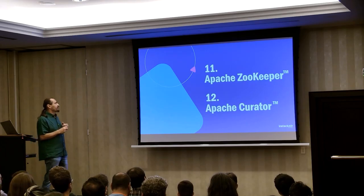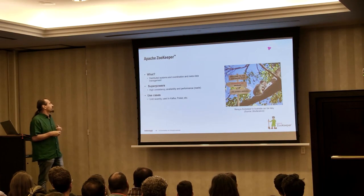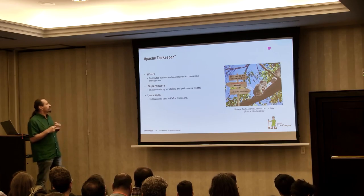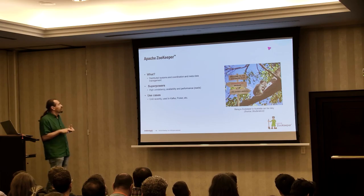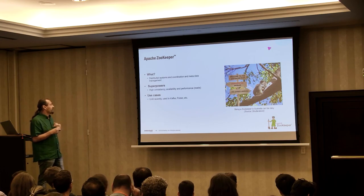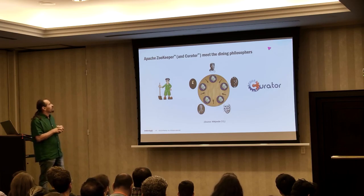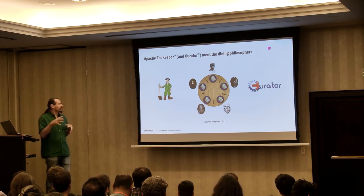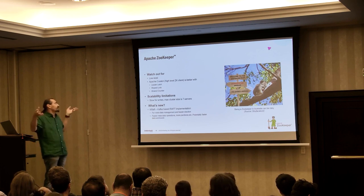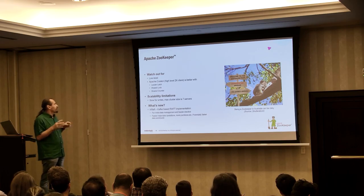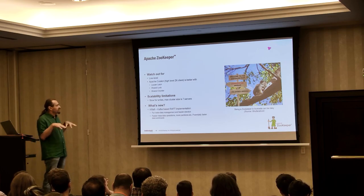Numbers eleven and twelve — ZooKeeper and Curator. ZooKeeper is a distributed systems coordination and metadata management system used by many Apache technologies. It gives high consistency, availability, and performance, but only for reads — performance for writes is suboptimal. Until recently it was used in Kafka, Pulsar, and quite a few other Apache projects. I built a demo app that solved the dining philosophers problem, a well-known coordination problem. Apache Curator is a high-level ZooKeeper client that provides abstractions for things like leader election, shared locks, and shared counters. It has limited scalability for writes and the maximum cluster size is about seven servers.